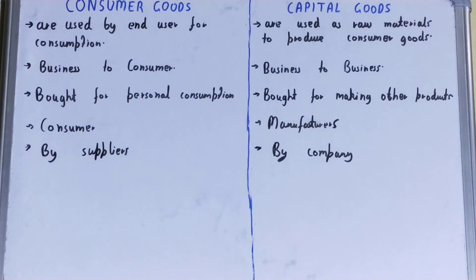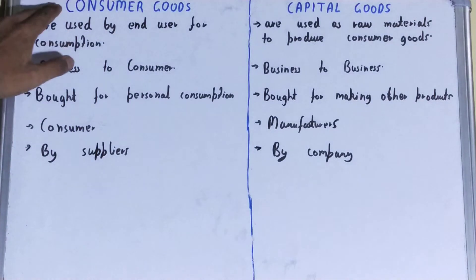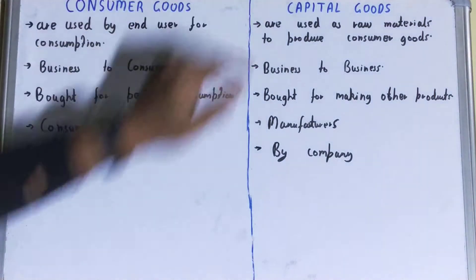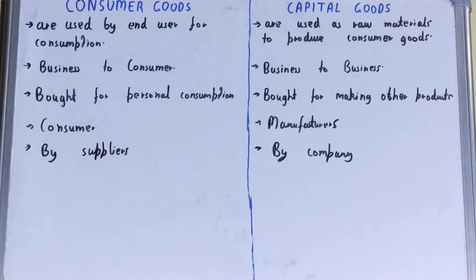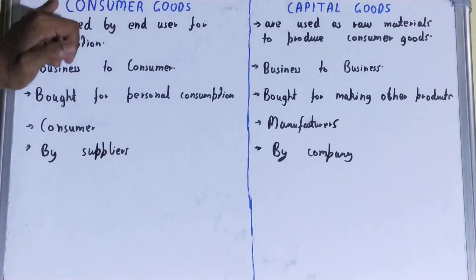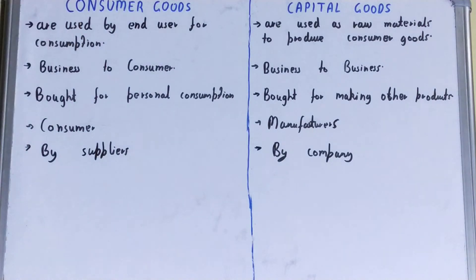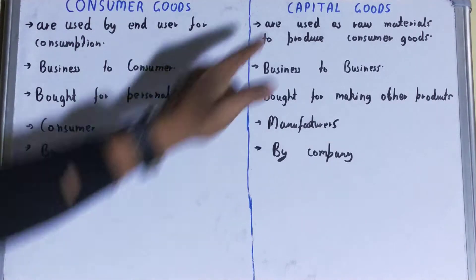Hello friends, in this video I'll be helping with the difference between consumer goods and capital goods. So let's start. Consumer goods are those goods which are used by the end user for consumption — they are directly consumed by the end user.